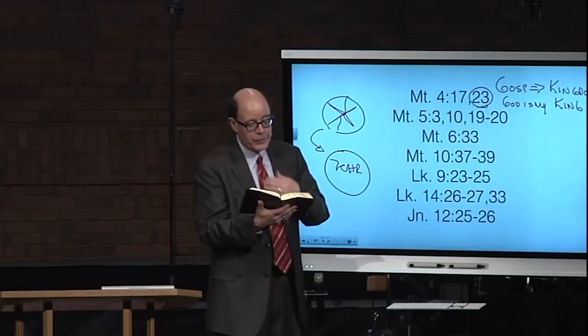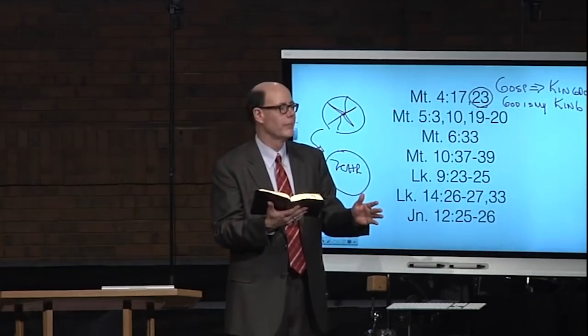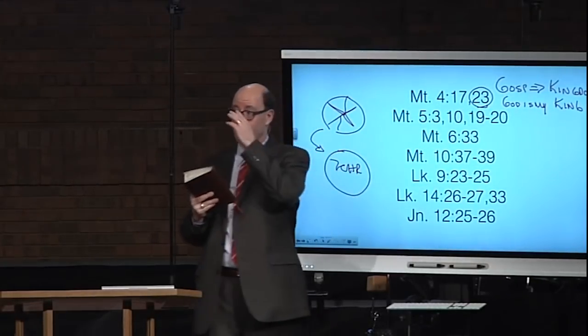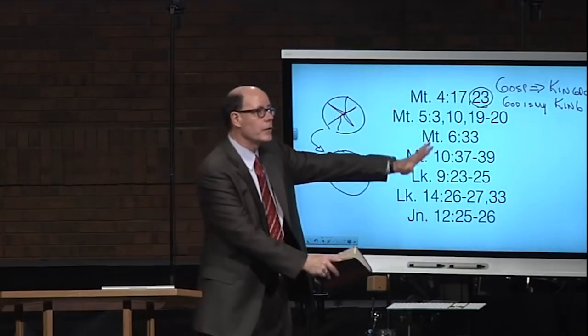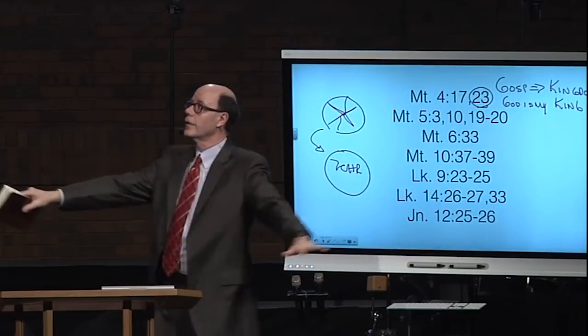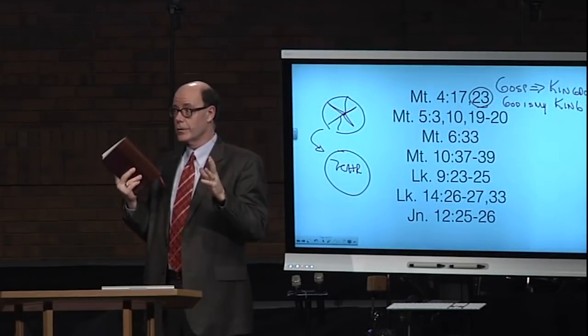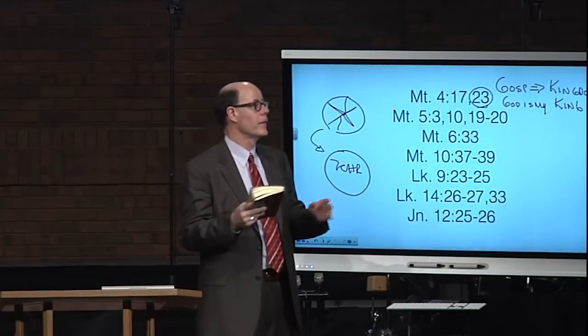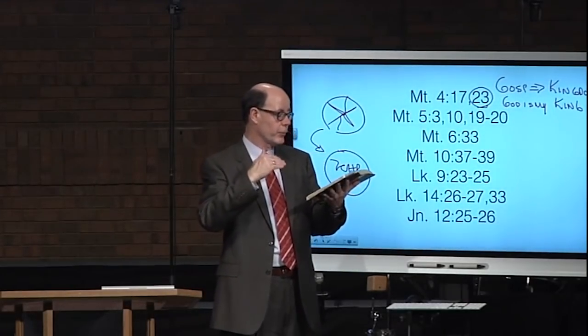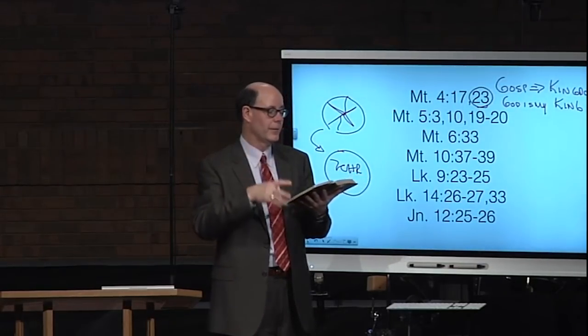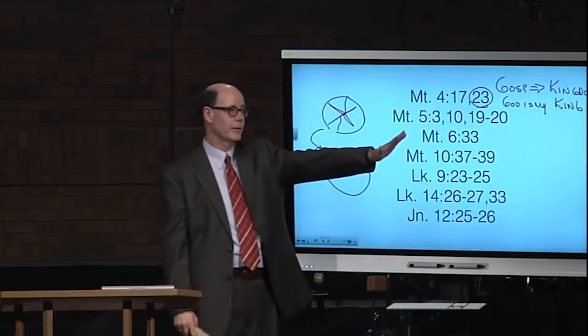In Luke 14, verse 26, Jesus says 'if anyone comes to me and does not hate his father and mother and wife and children and brothers and sisters and his own life also, he can't be my disciple.' We're talking about a love that is so supreme it almost looks like we don't have any love for others because his is so complete. That's what it means to be a Christian: I love God more than myself or anyone else. Verse 33 says 'whoever doesn't forsake all that he has can't be my disciple.' I'm entering a kingdom, I get a new king, and he's in charge.